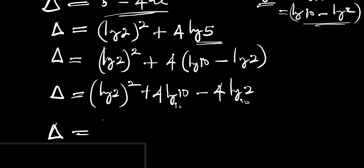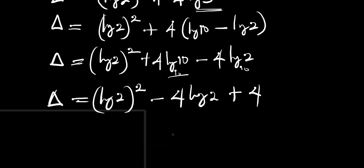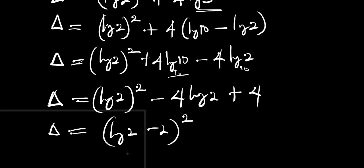So the discriminant equals log of 2 squared minus 4·log of 2 plus 4. This factors as log of 2 minus 2, all to the power of 2. If you expand that, you get back what we have here.